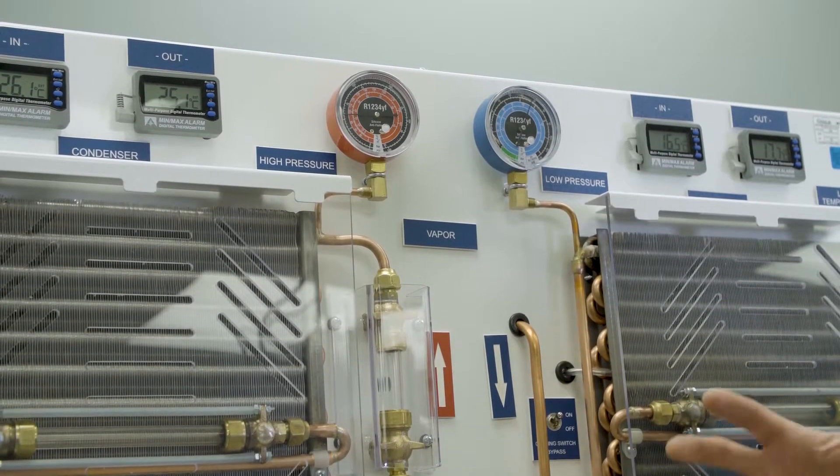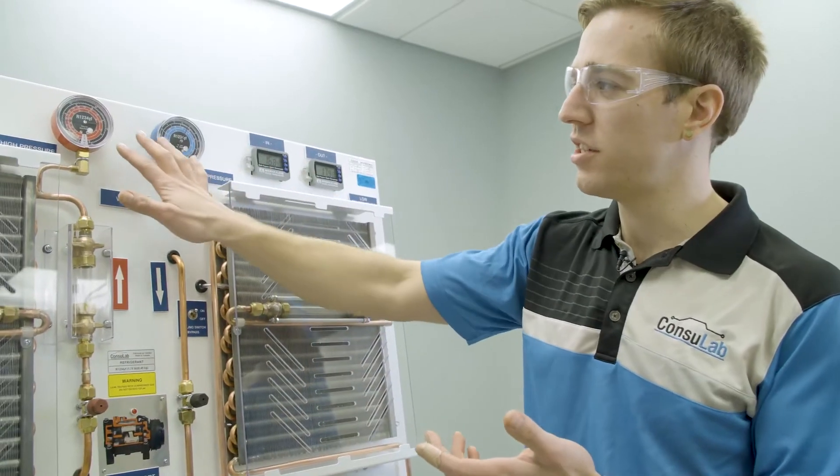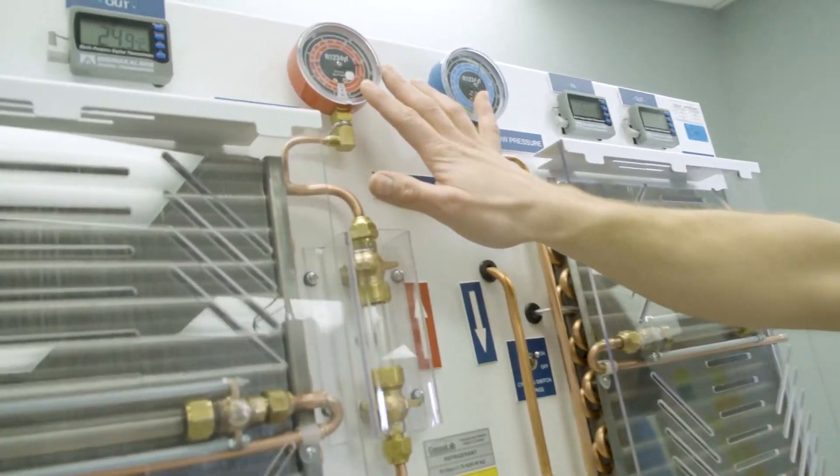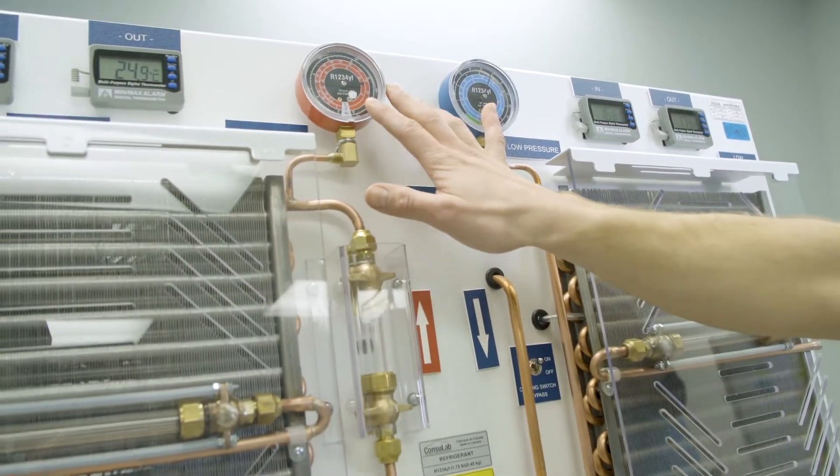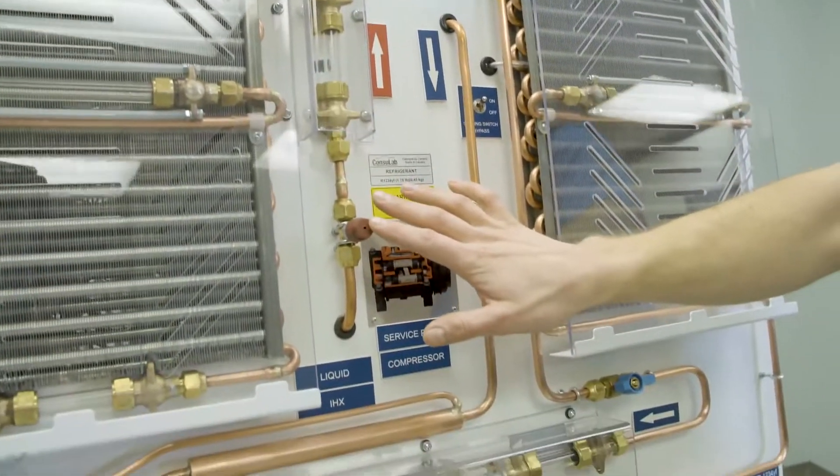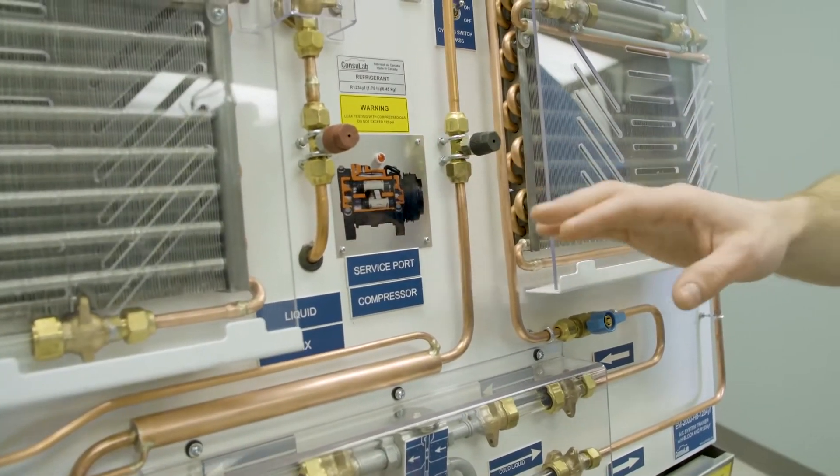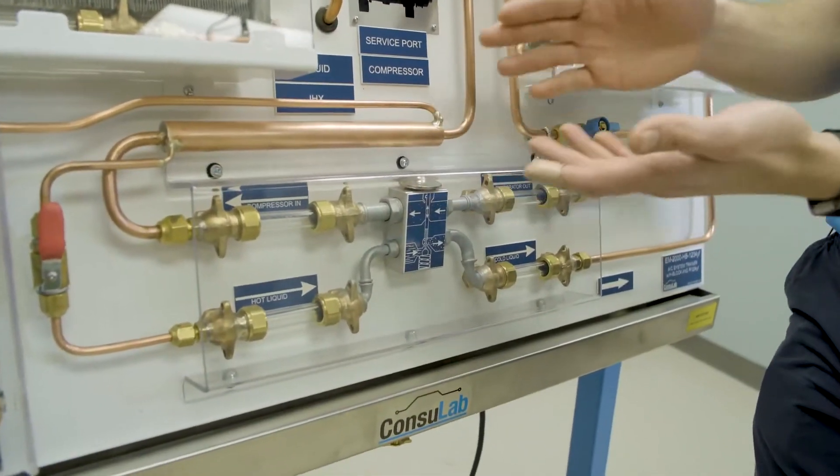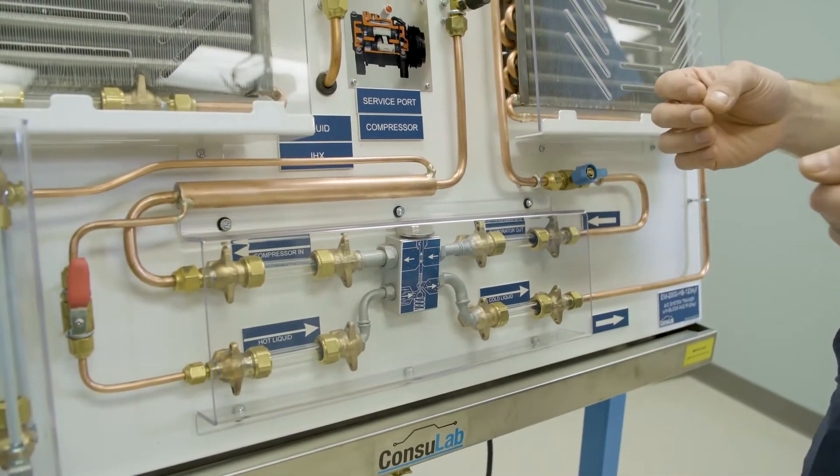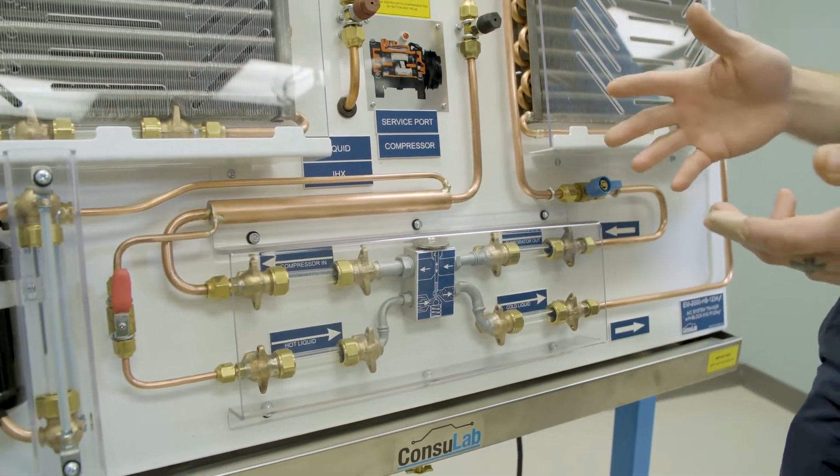Now some of the changes that we have with this new product. We've had to change the gauges, so these are new gauges for our 1234YF refrigerant. Following that we've had to change the service ports here and we've added another component. Now this is called the IHX, this is an internal heat exchanger and it increases the overall system efficiency.